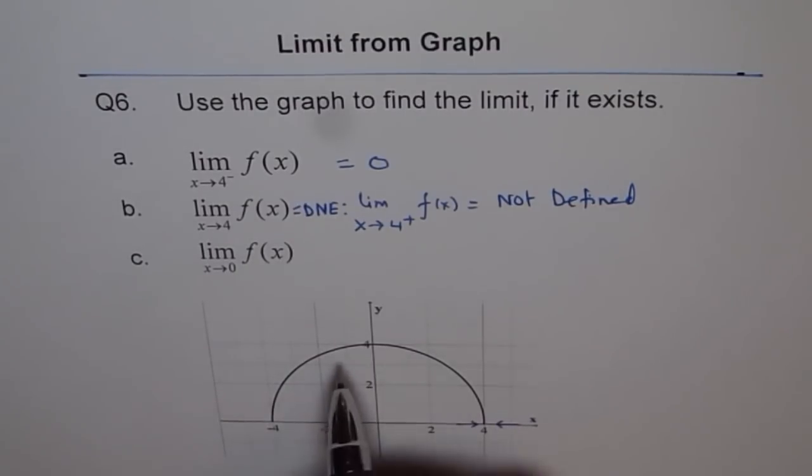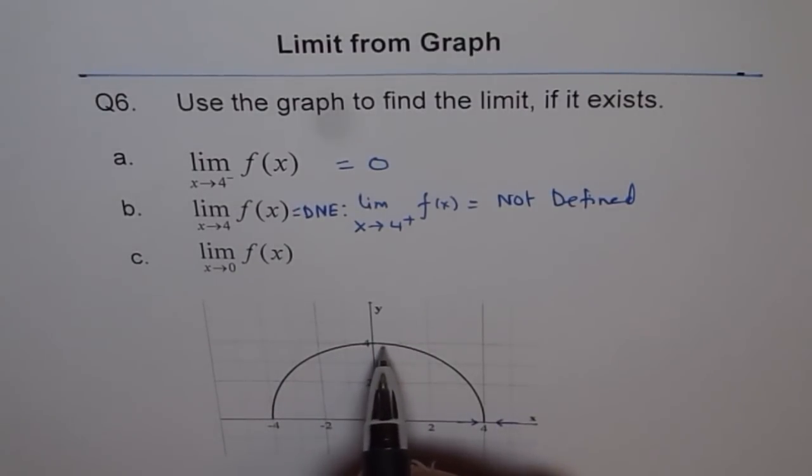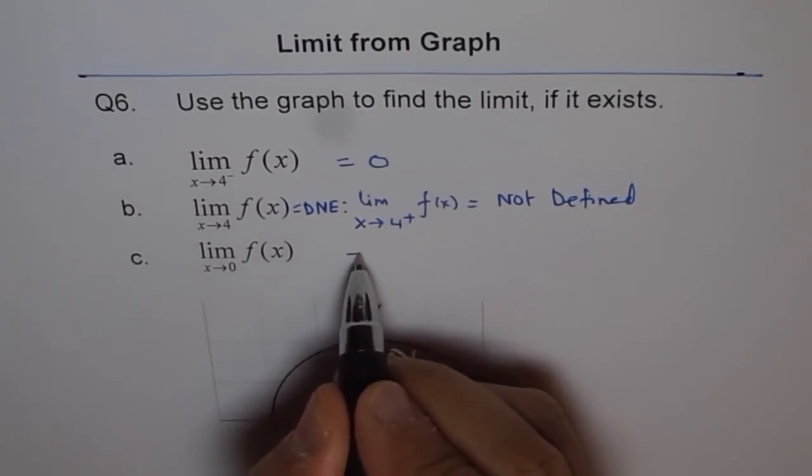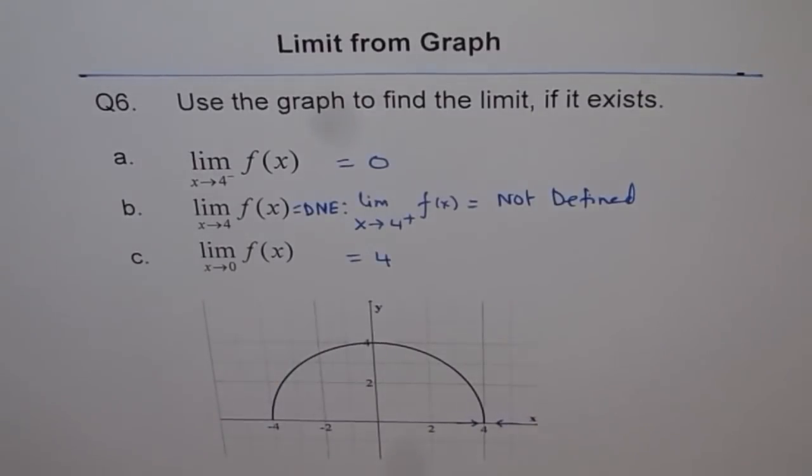As x approaches 0 from the left or from the right, we approach 4. From both sides we approach one value, and that is 4. Therefore we say that the limit exists and its value is 4. That is how we are going to answer this question.